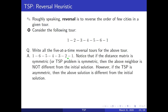This candidate will not be a new reversal unless the distance from 6 to 5 is different from the distance from 5 to 6, the distance from 5 to 4 is different from the distance from 4 to 5, and so on. This can only happen when the formulation is not symmetric. So basically, for a six-city problem, a five-at-a-time reversal can only occur when the problem is asymmetric.